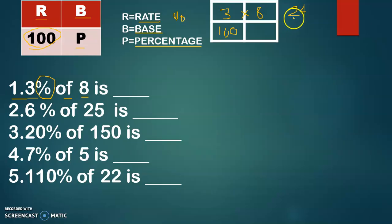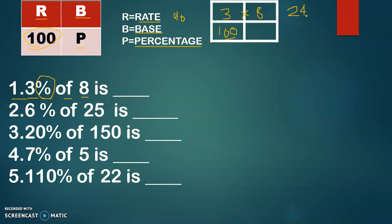After multiplying, you divide by the remaining number, which is 100. In dividing any number by 100, since 100 is a power of 10, you just move the decimal point to the left two places. So 24 divided by 100 — move the decimal point two places — gives us 0.24. Therefore, 3% of 8 is 0.24.